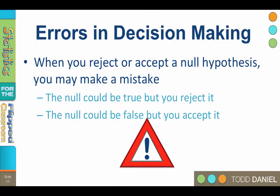When you make a decision to reject a null hypothesis, or accept a null hypothesis — which is really failing to reject the null — you could make a mistake. The null could be true but you reject it, or the null could be false but you accept it. A Type 1 error is rejecting a null hypothesis that is actually true, i.e., a false positive. A Type 2 error is accepting a null hypothesis that's actually false, also known as a false negative.